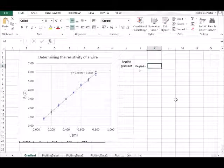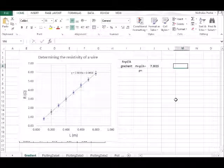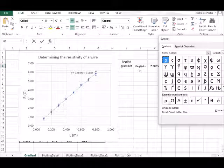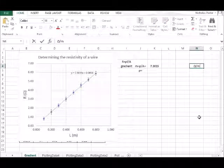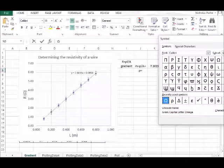What a lot of students forget to do, particularly for gradients or compound variables when things are multiplied together, is to include units, and when you have a gradient you should always include a unit with it. In this case we're dividing resistance by length, so we end up with ohms per metre.